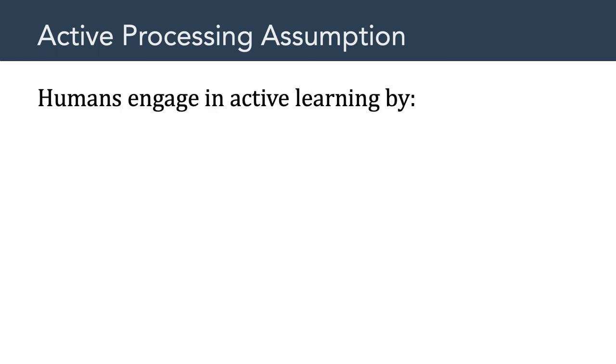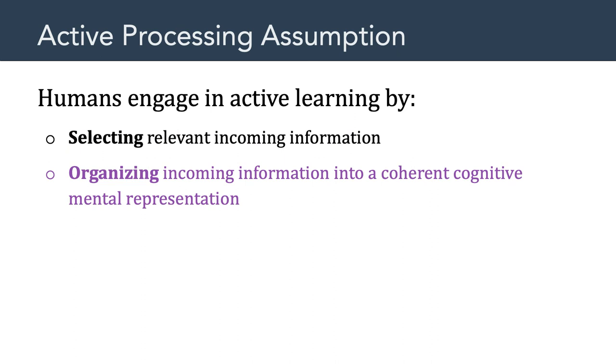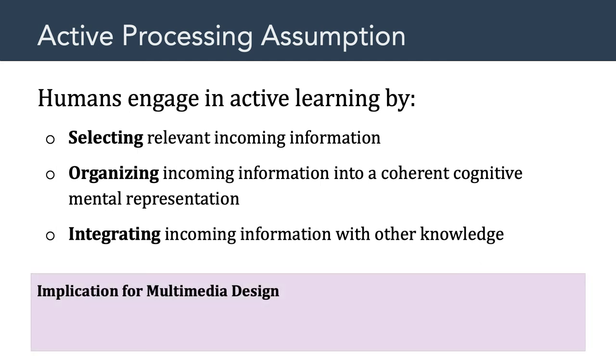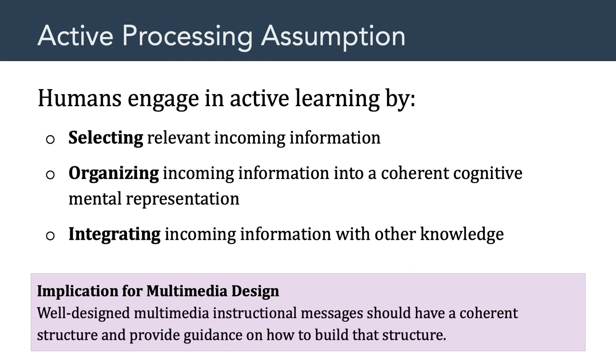The third assumption behind the cognitive theory of multimedia learning is the active processing assumption. And this is the idea that humans engage in active learning by selecting relevant incoming information, organizing that incoming information into a coherent mental representation, and then they integrate incoming information with other existing knowledge. These three steps, selecting, organizing, and integrating, only happen deliberately. Humans have to actively process and engage in learning by selecting, organizing, and integrating information. The implication for multimedia design is that well-designed multimedia instructional messages should have a coherent structure and provide guidance on how to build that structure in working memory. So those are the three assumptions that the cognitive theory of multimedia learning are based on.